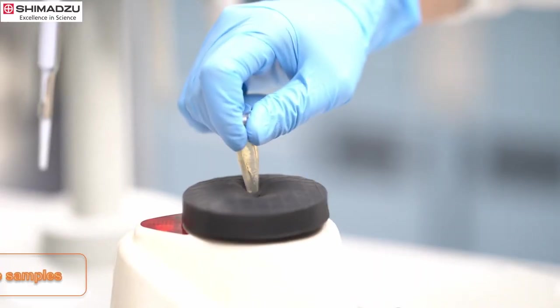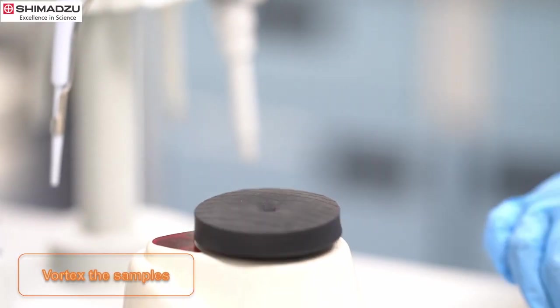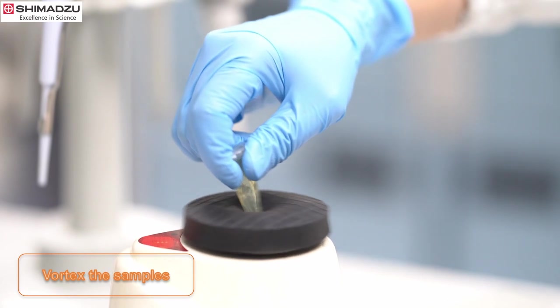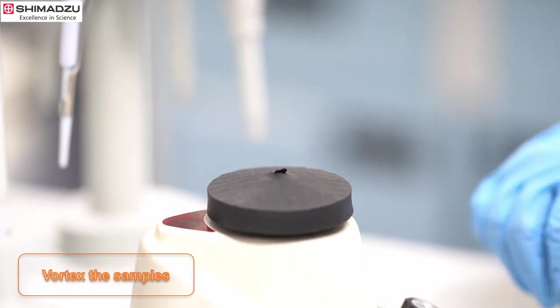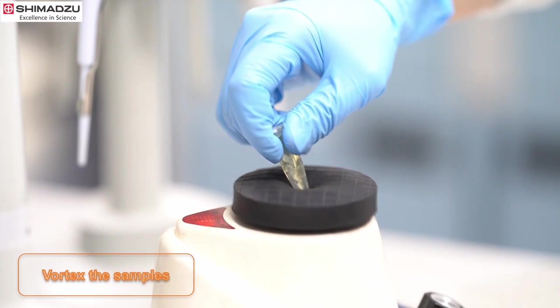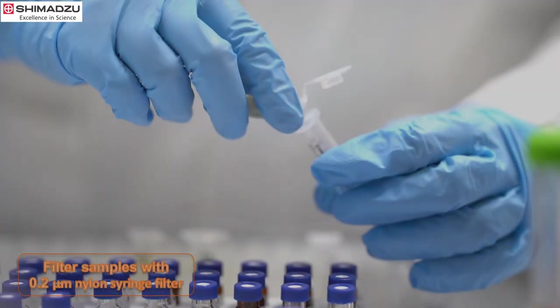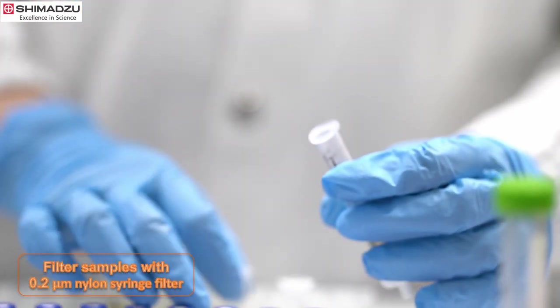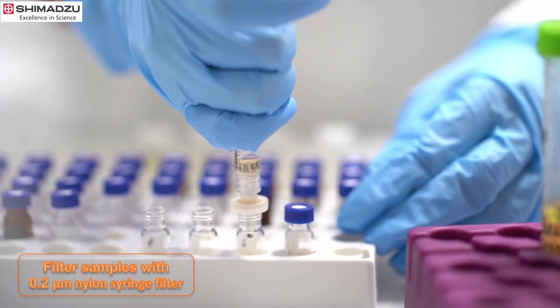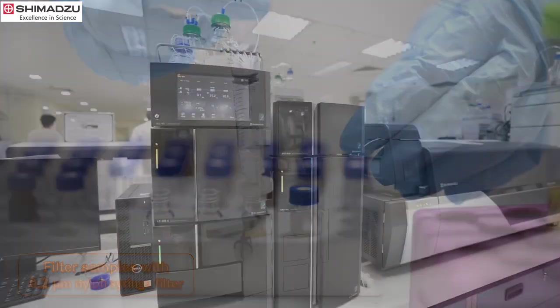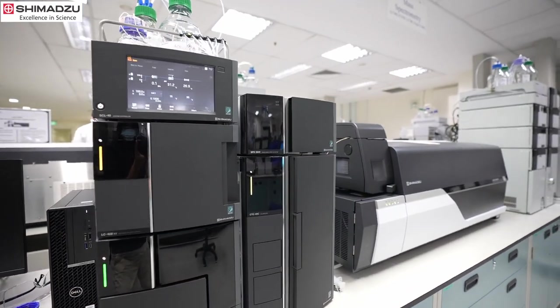Then mix the sample with Vortex Mixer for around 3 seconds. After that, filter the sample using 0.2 micrometer nylon syringe filter into a LC vial. The samples are now ready for instrument analysis.